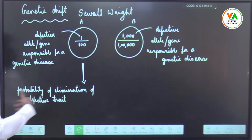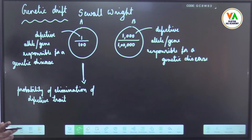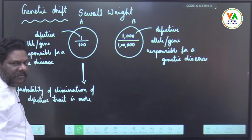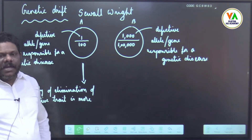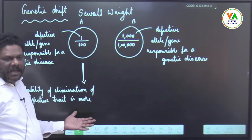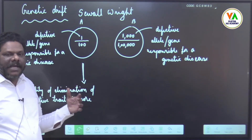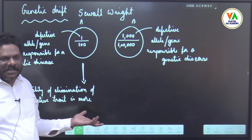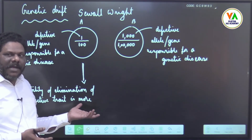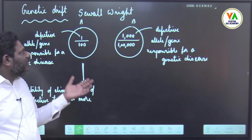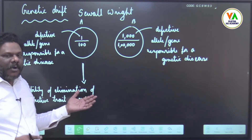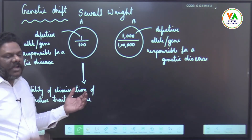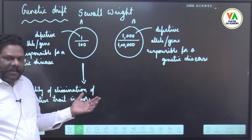The probability of elimination is more in the smaller population. That means if that one person is eliminated, then all will be healthy. Just like pedigree analysis — if everyone is healthy, there is no point of pedigree analysis. Here we are making one individual defective in order to see the probability of elimination or continuation.